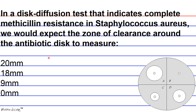From the passage, 9 or 18 millimeter zones of clearance would be seen in intermediate susceptibility to methicillin, so these are out. A zone of clearance of 20 millimeters or greater would indicate complete susceptibility to methicillin, so answer choice A is also out. 0 millimeters would indicate complete resistance to methicillin. The correct answer is D, 0 millimeters.